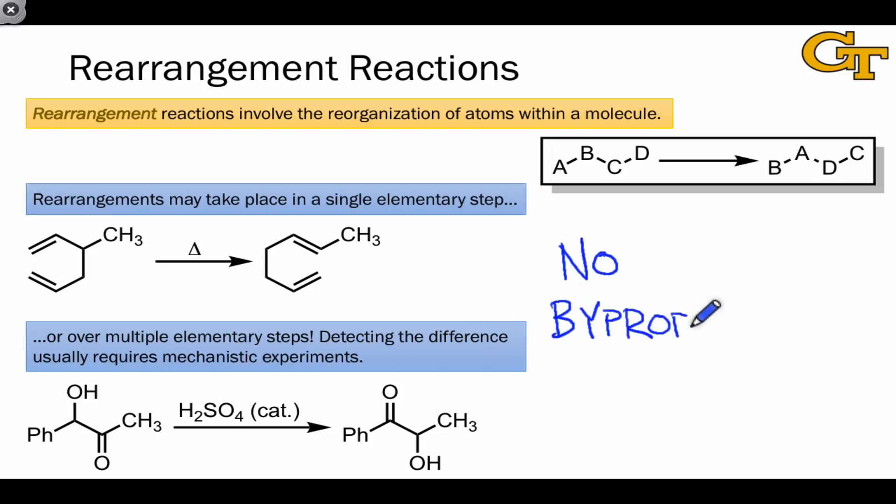One important point about rearrangements that distinguishes them from the three other reaction types we've looked at so far is that because they simply involve a skeletal reorganization without the incorporation of any new atoms into the substrate or the ejection of any atoms from the substrate, these reactions have no byproducts. This doesn't mean that they always lack any other reagents, but any reagents that are used must be used catalytically, meaning in substoichiometric amounts less than one equivalent, such that they're regenerated at the end of the mechanism.